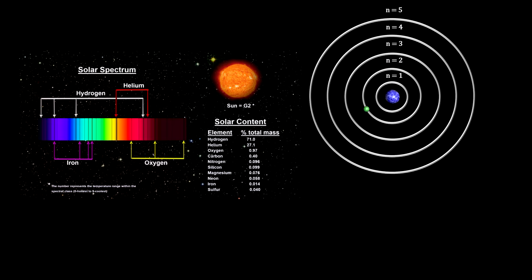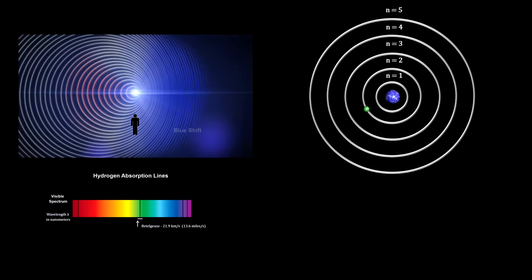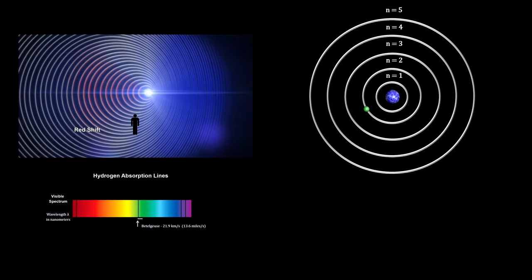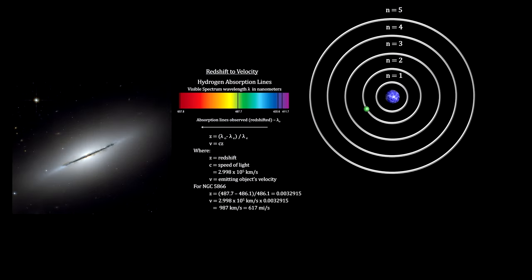By observing the absorption lines in a star's spectrum, we can tell what the star is made of. And not only that, by analyzing how these lines shift, we can calculate star radial velocities via the Doppler effect, and even use them to measure their distances and the expansion of the universe.